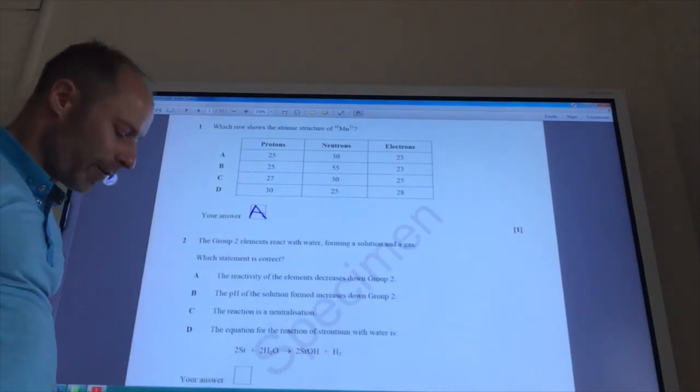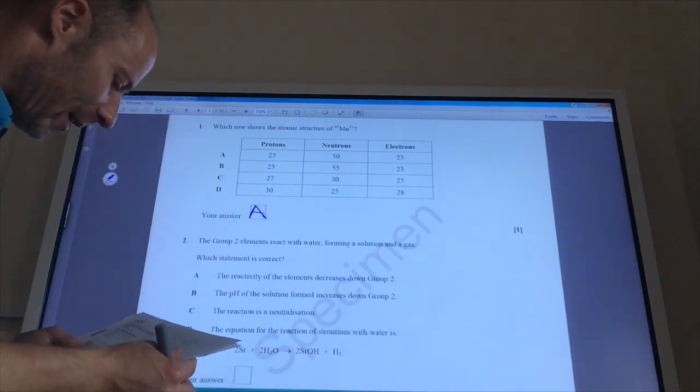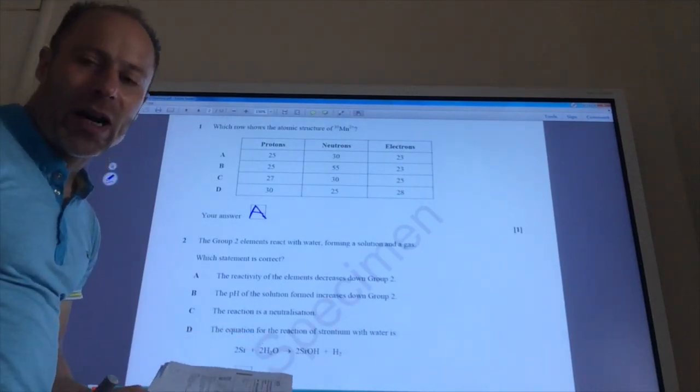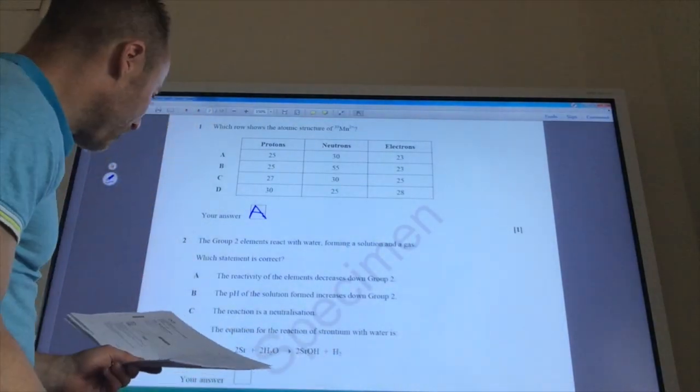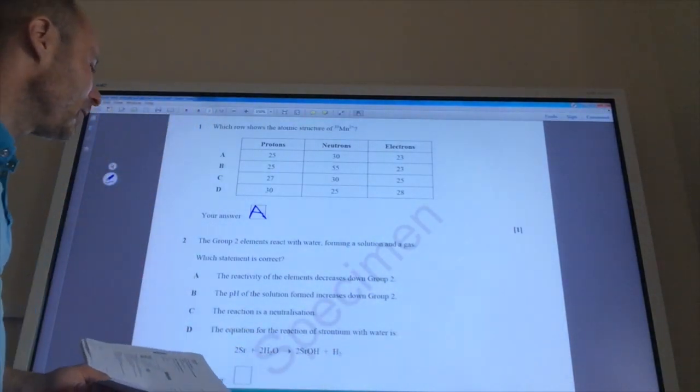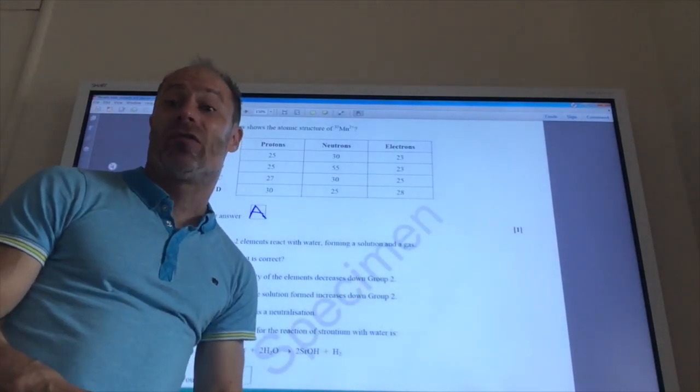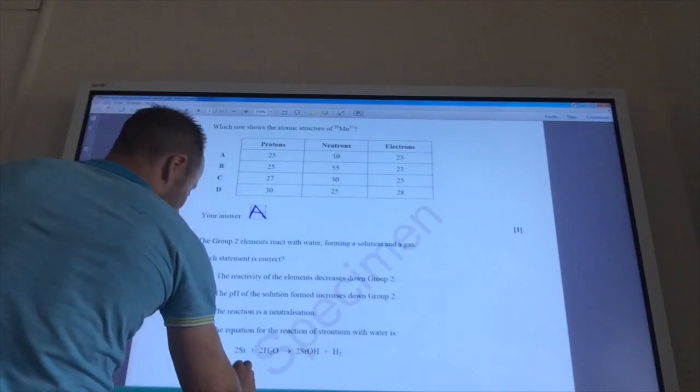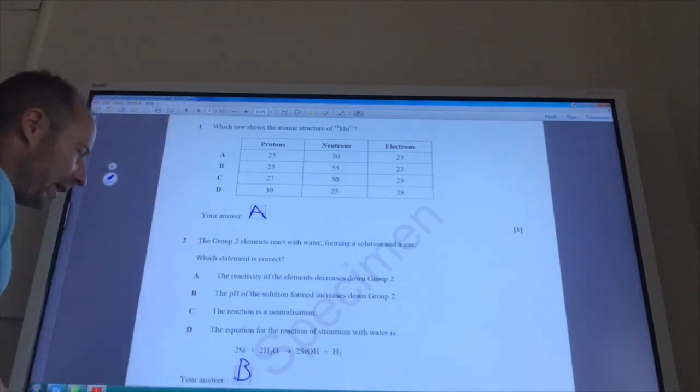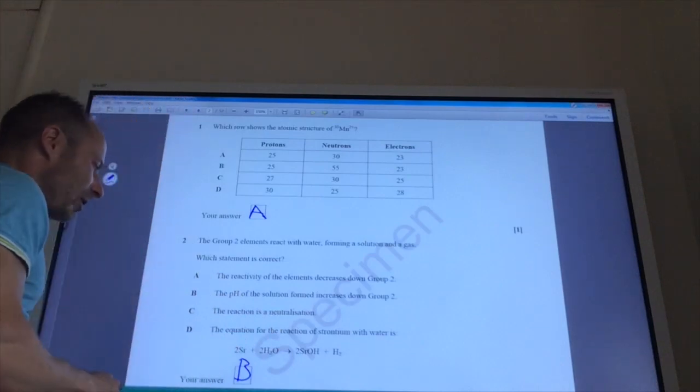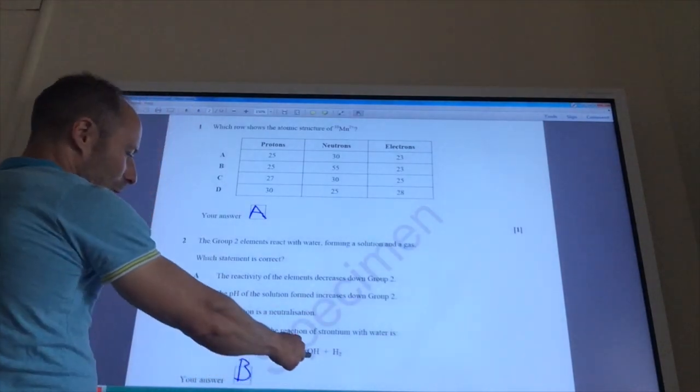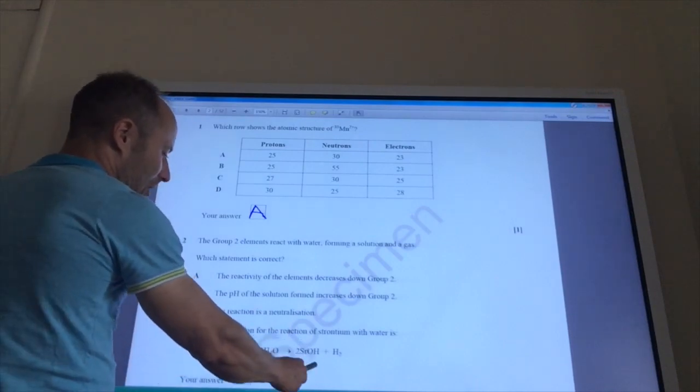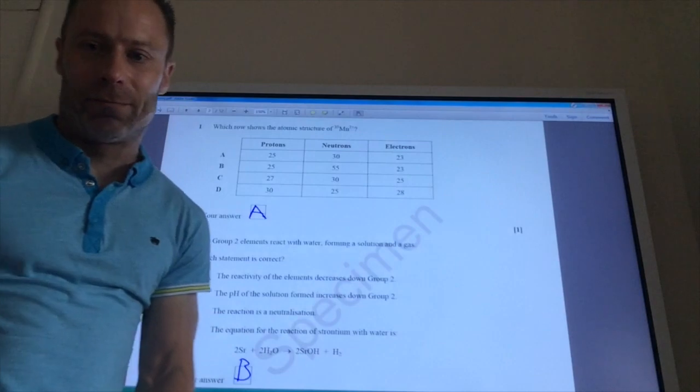Group 2 elements react with water forming a solution and a gas. Which statement is correct? Reactivity of elements decreases down the group. No, actually increases to go down the group. The pH of the solution formed increases down group 2. That is correct. So straight away we can say the answer to that is B. It's not a neutralisation reaction. And for this one, the formula of strontium hydroxide is wrong. That should be Sr(OH)2 for that one.